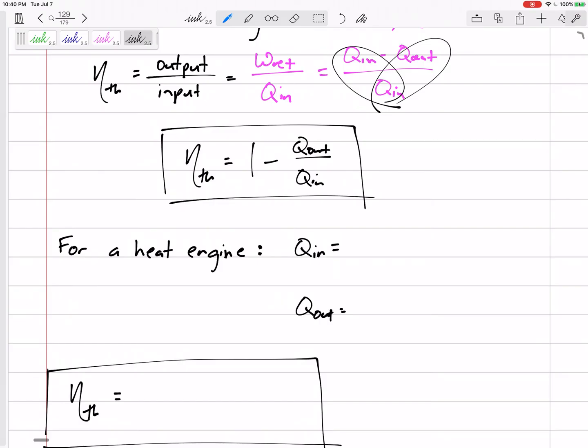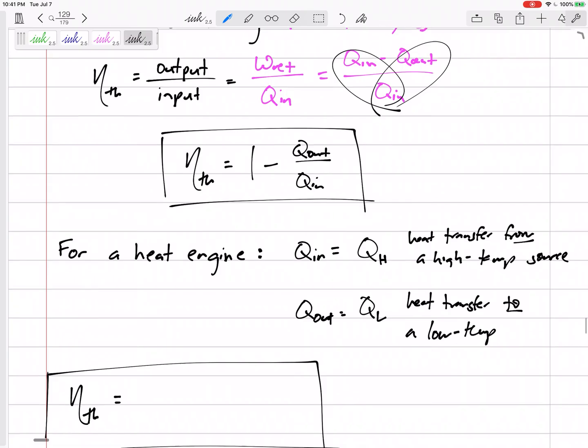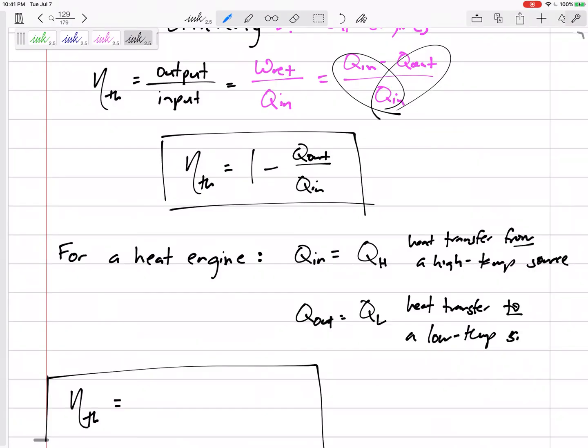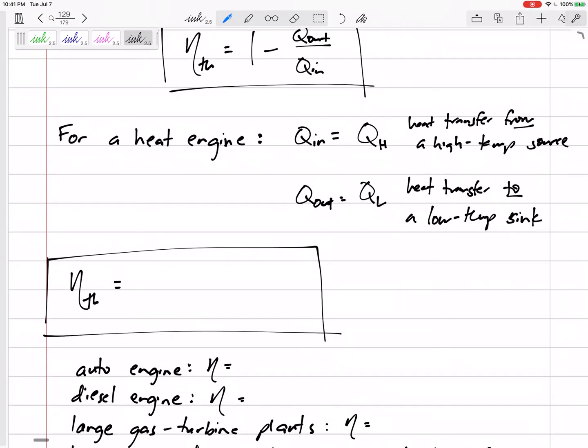For a heat engine, Q_in is Q_H, the heat transfer from a high temperature source, and Q_out is Q_L, the heat transfer to a low temperature sink. So η = W_net / Q_H, or η = 1 - Q_L / Q_H. We've got a lot of different formulas here to juggle around.